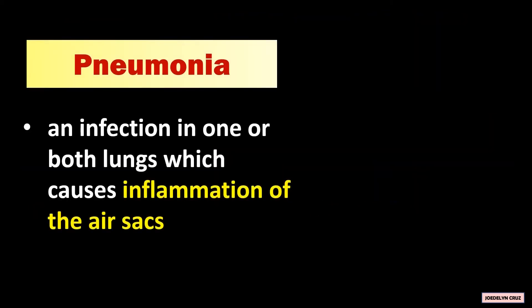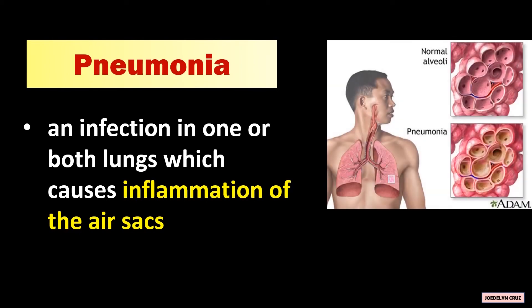Pneumonia is an infection in one or both lungs which causes inflammation of the air sacs. In this picture, these are the normal alveoli, while these are the inflamed alveoli.